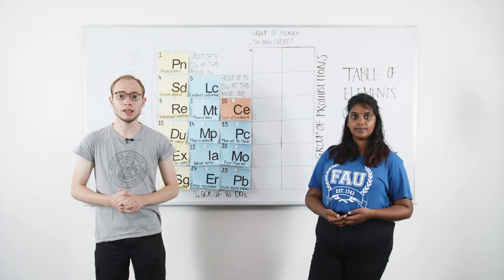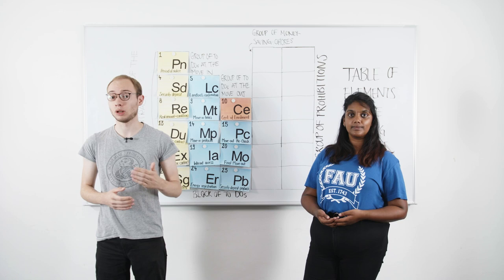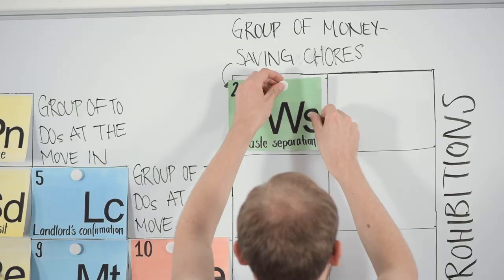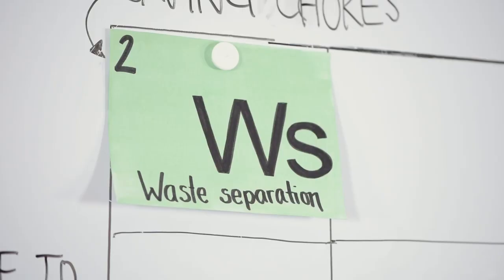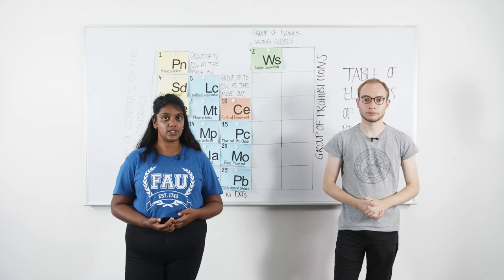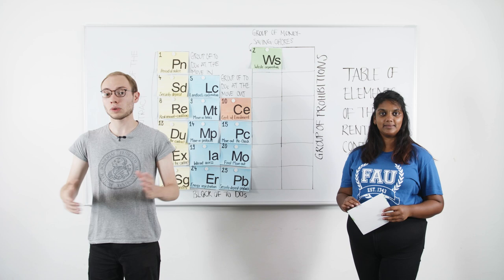While we're on the topic of saving money, let's move on to the group of money-saving chores. All of these are to prevent long-term damages that might cost you a lot of money. First is waste separation. This is a very German thing, and we make quite a fuss about it, so you have to pay a fee if you don't do it properly. You'll get information from FAU's accommodation service or can talk to your landlord, caretaker, and tutor.